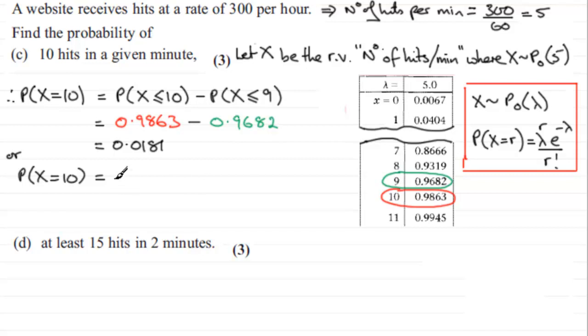Well, if we're looking at R being equal to 10, lambda is 5, so therefore this is going to be lambda, 5, to the power R, which is 10, multiplied by E to the minus lambda, E to the minus 5, all over R factorial, 10 factorial.